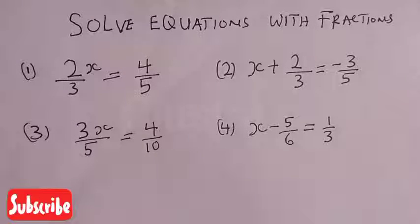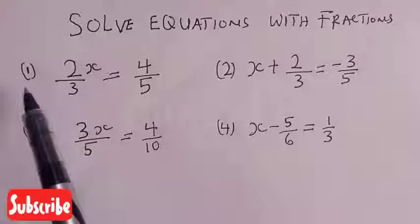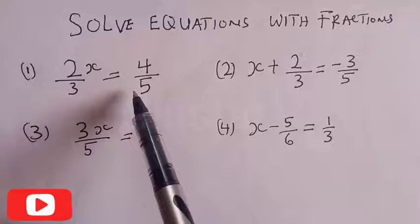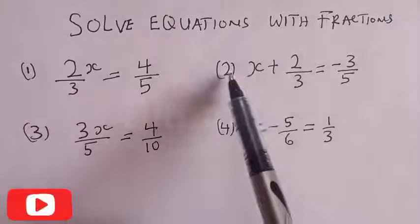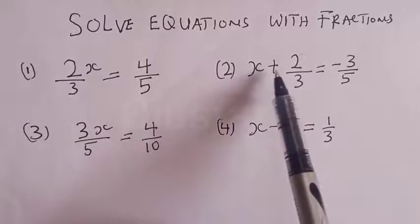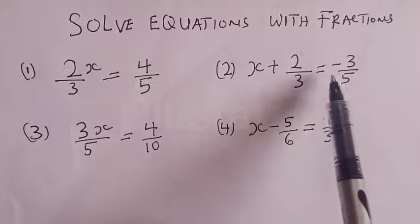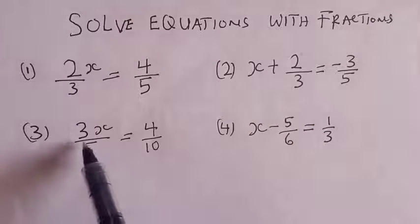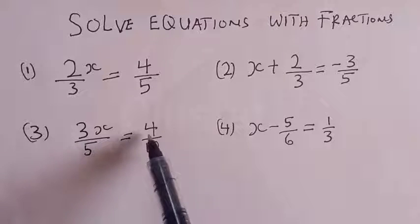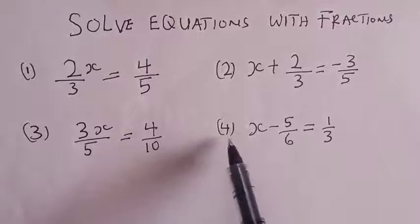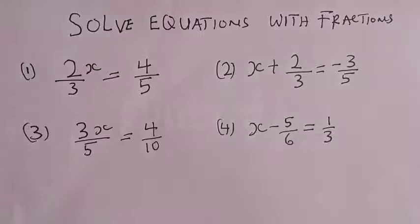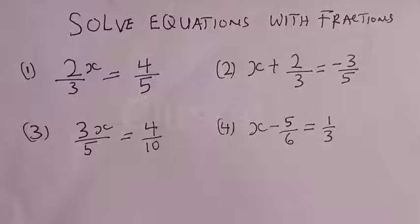The questions say: solve the equations with fractions. Question number one is 2x over 3 equal to 4 over 5. Question number two is x plus 2 over 3 is equal to minus 3 over 5. Question number three is 3x over 5 is equal to 4 over 10. And question number four is x minus 5 over 6 is equal to 1 over 3.